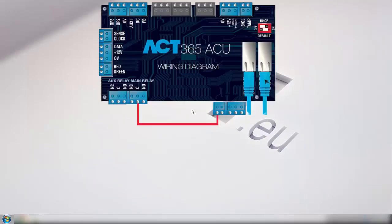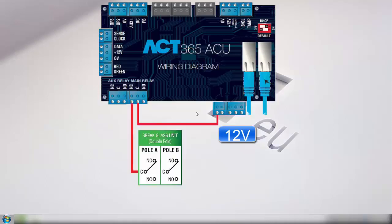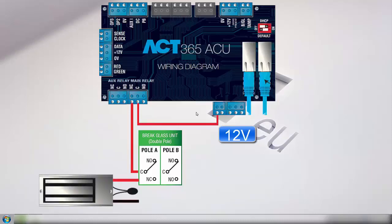In order to wire the mag lock we need to take 12 volts from the 12 volt output and wire it into common on the main relay. We then have to wire from normally closed on our relay to common on our break glass unit. Then from the normally closed on the break glass unit to the positive of the mag lock. Lastly to complete the circuit we have to connect a negative of the lock back to 0V on the PSU.